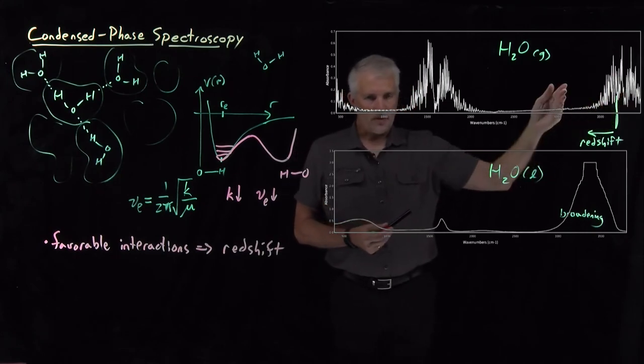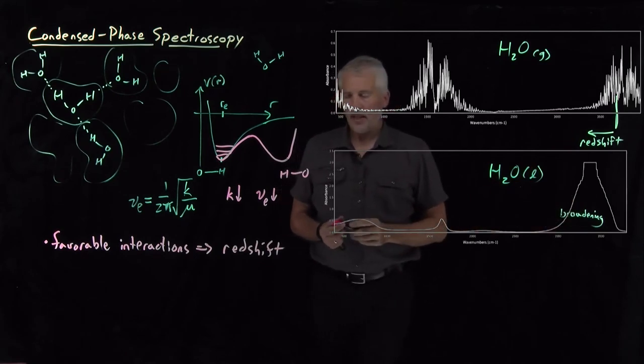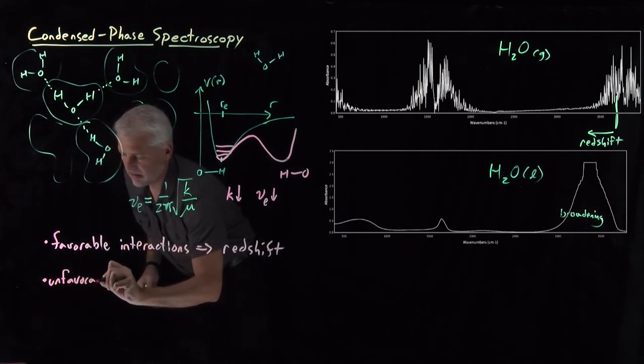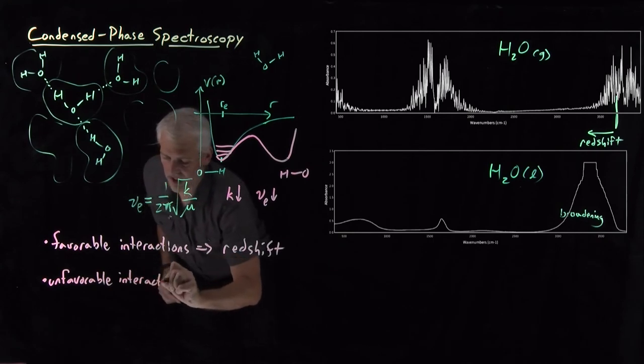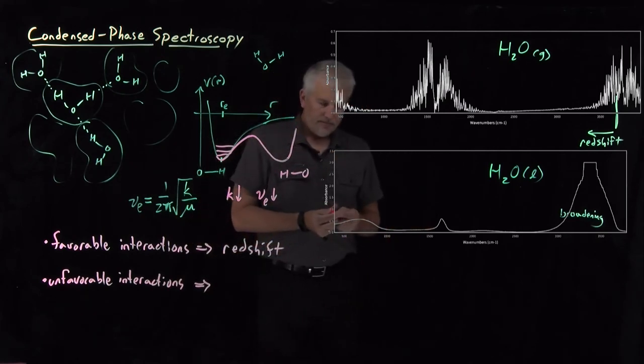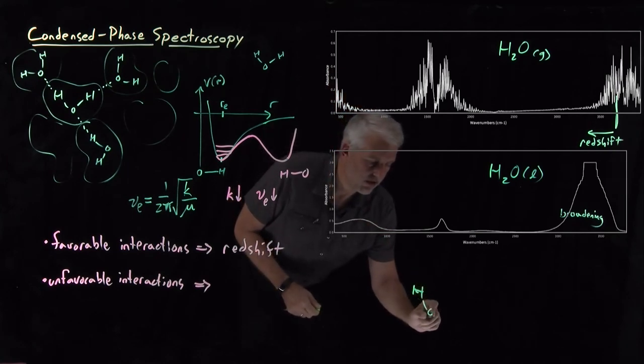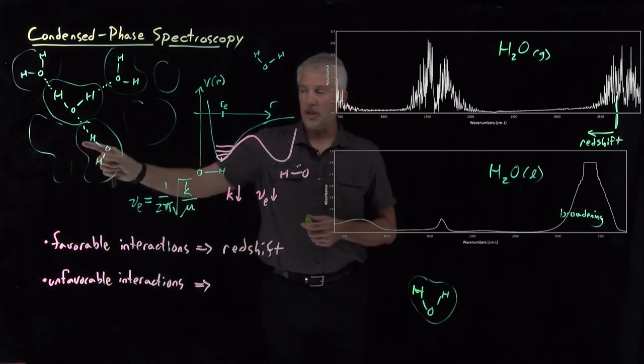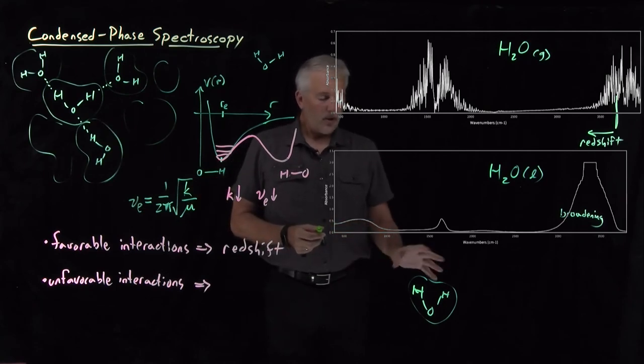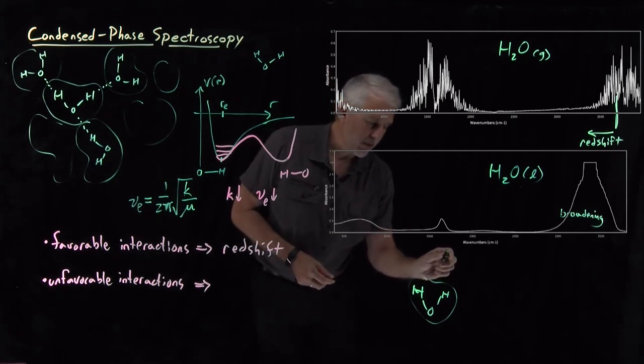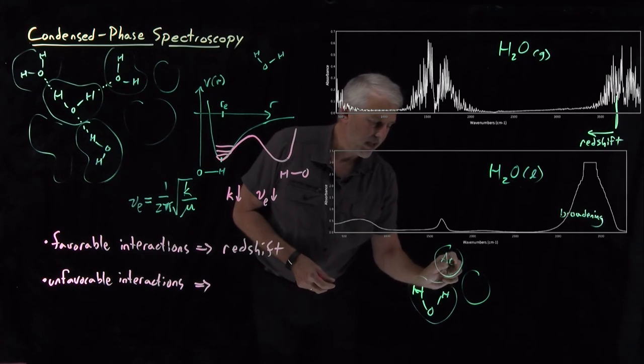The exact opposite can happen if we have unfavorable interactions. Let's imagine what would happen if I take a water molecule and surround it by molecules that it's not favorably interacting with. Rather than surrounding it in the liquid phase by other water molecules, to which it can favorably hydrogen bond, I don't want to surround it with anything polar in which it can have favorable dipole-dipole interactions, certainly nothing that it could hydrate or bond with. If I want to have it interact as unfavorably as possible, let's go ahead and surround that molecule with some rare gas atoms like argon.